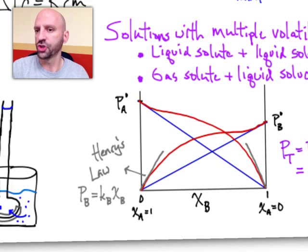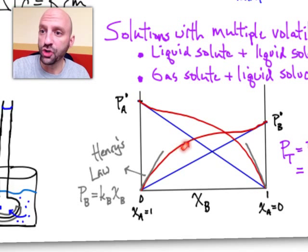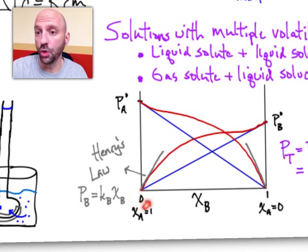So the question is then, how much of component B might I have in my solution based on the partial vapor pressure of B? Well, it turns out that so long as the concentration of component B is fairly low, so chi sub B is closer to zero,